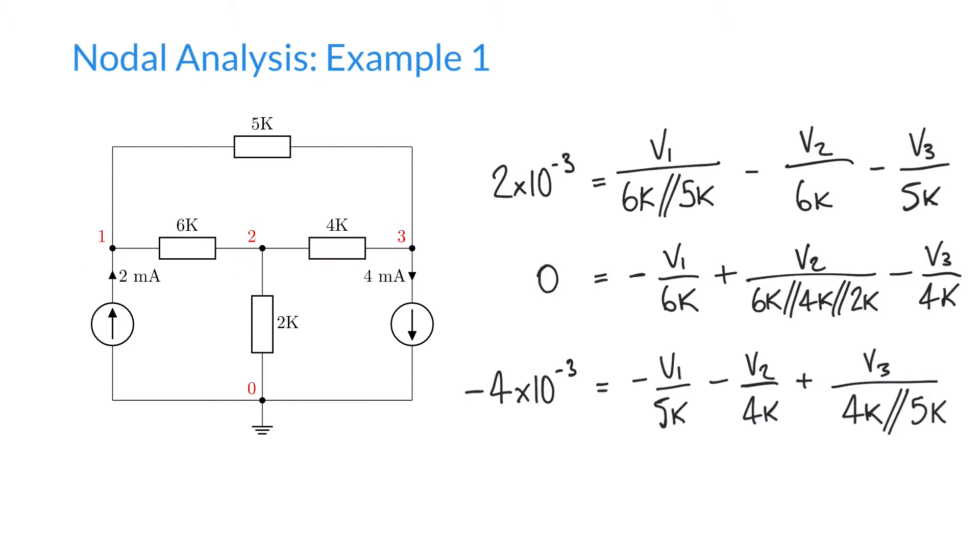We have v1, the voltage of that node, divided by the impedances or resistances in this case directly in contact with that node. We give these as being in parallel with one another. In this case we have 6k and 5k directly connected to that node, so we have 6k in parallel with 5k.